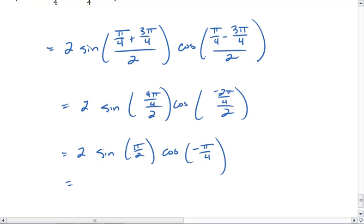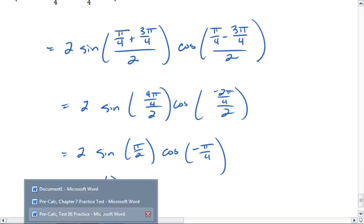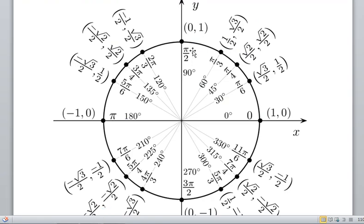I can use my unit circle, get 2, sine of pi over 2 is 1, so we can see pi over 2, our sine value is 1.